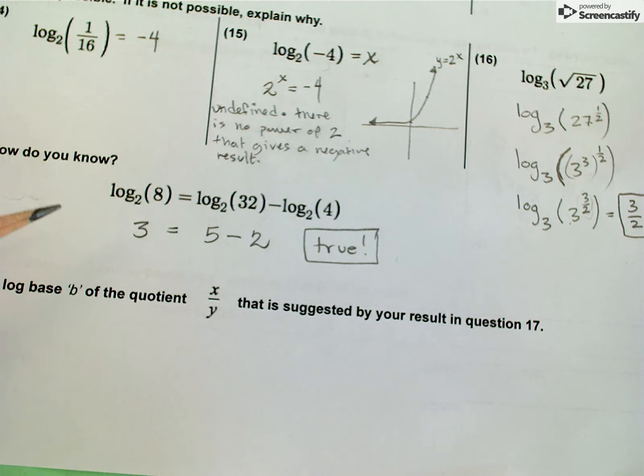Another thing I wanted to do with this problem before I move on is notice that 32 divided by 4 is equal to 8. So there's that other relationship that's kind of hidden in here.